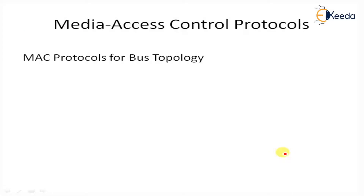Next, MAC protocols for bus topology. The first protocol is FairNet. The FairNet medium access control protocol addresses the unfairness problem by using a probabilistic access mechanism, providing an equal share of bandwidth to all nodes — that is, the total bandwidth is equally distributed among all nodes. The second protocol is WDMA, the Wavelength Division Multiple Access protocol.